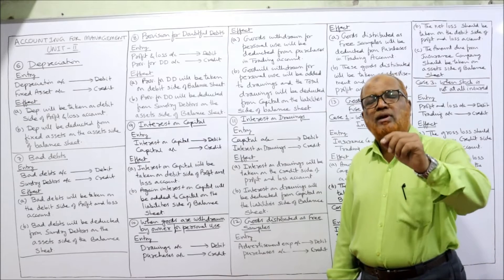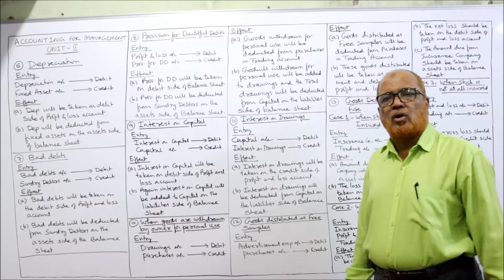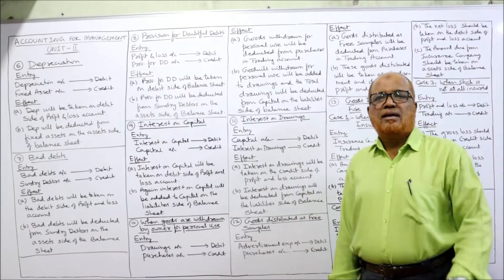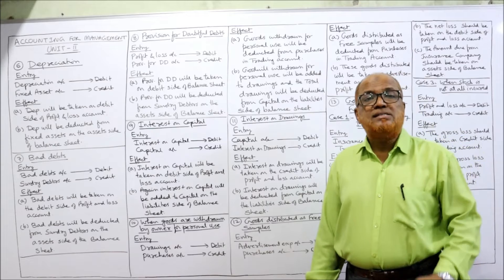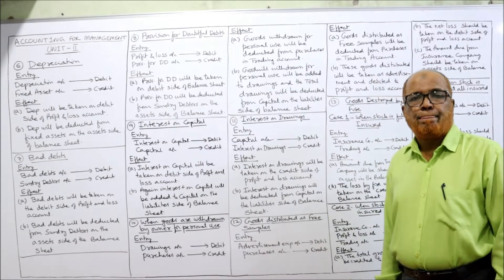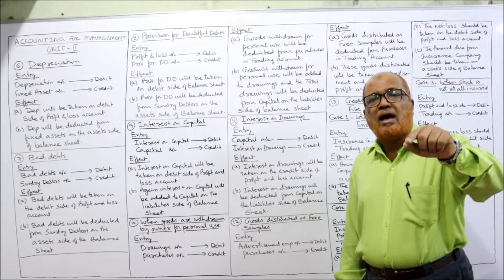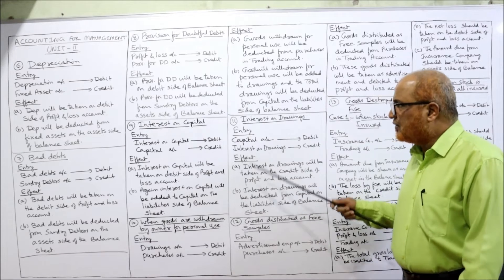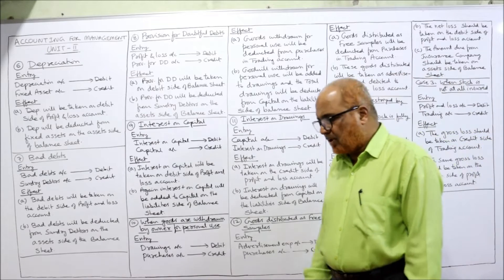The next adjustment is interest on drawings. In some problems a provision for interest on drawings is given, say at 5 percent. First calculate 5 percent on drawings to get the interest on drawings. The entry is: Capital Account debit, Interest on Drawings Account credit. Interest on drawings is an income to the business, so it is taken on the credit side of the Profit and Loss Account. This interest on drawings is also deducted from capital on the liability side of the balance sheet.